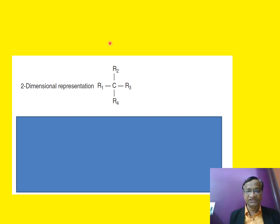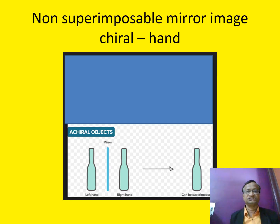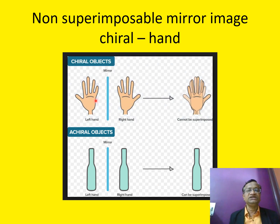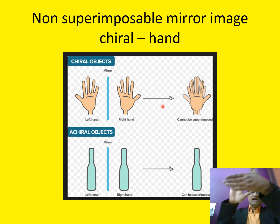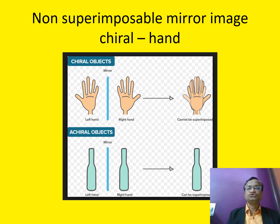This is the two-dimensional representation. These structures cannot be superimposed — this is what is called a change in the three-dimensional structure. To clearly explain stereoisomerism: this is non-superimposable mirror image. If you push the mirror image it becomes superimposable. But like the left hand and right hand, this mirror image cannot be superimposed — if you go to a mirror and it cannot be superimposed, this is what is called a non-superimposable mirror image or chiral object.